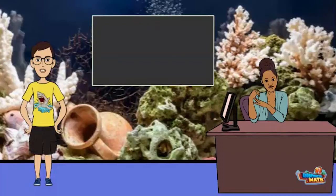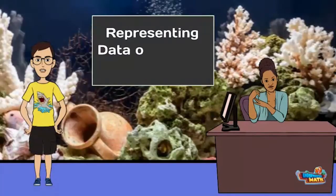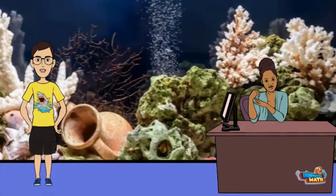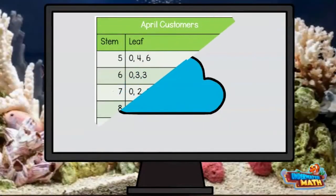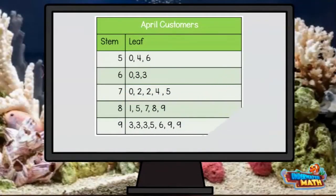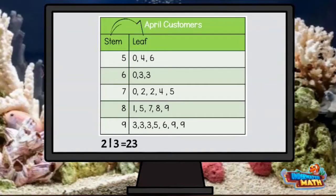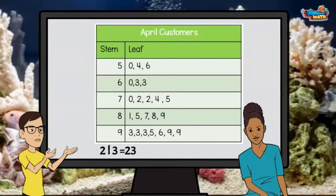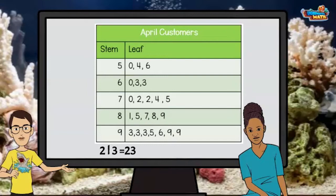Hey, it's Gilbert again. Today we will talk about representing data on a stem and leaf plot. Hi Shana, what are you looking at? This is called a stem and leaf plot, Gilbert. This is a way to represent data. This column is the stem and this column is the leaf. Interesting — I have never seen one of these charts before.